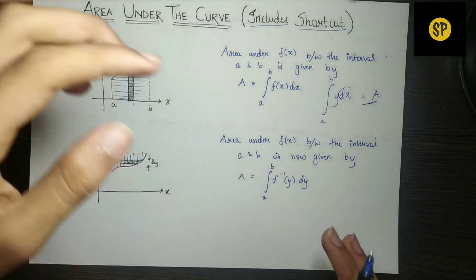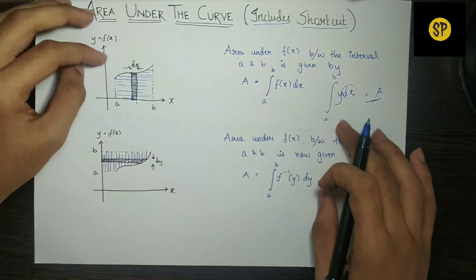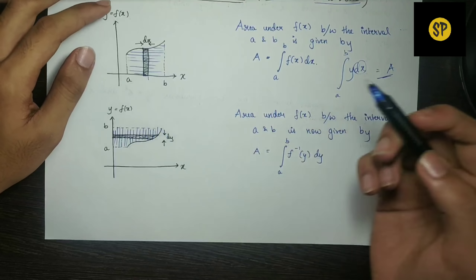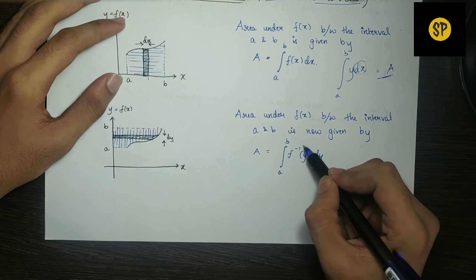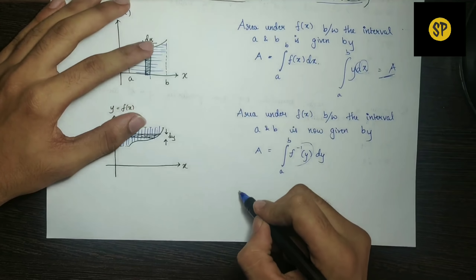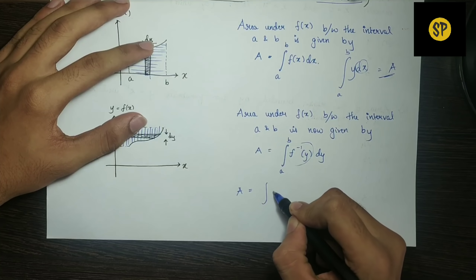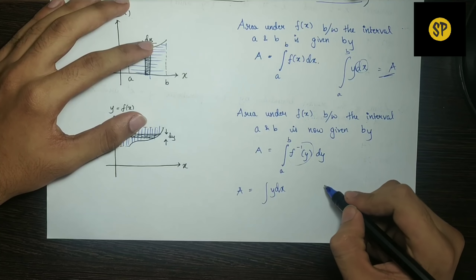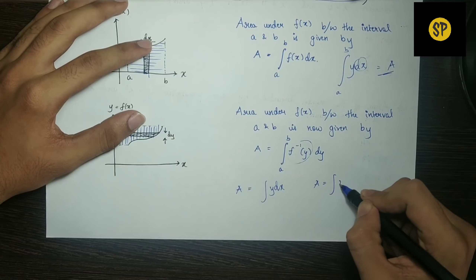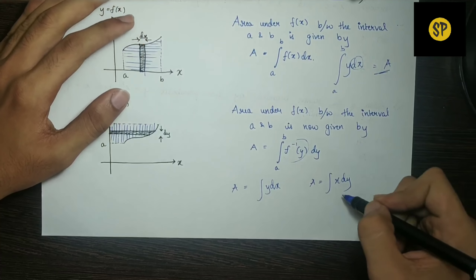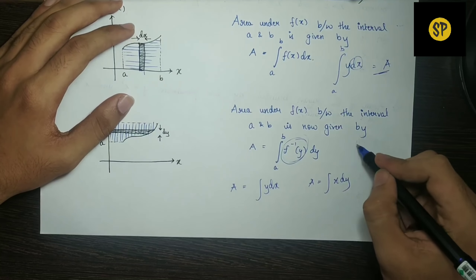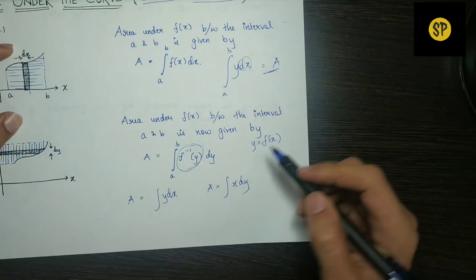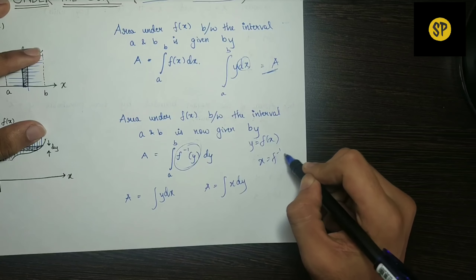If we are working with respect to the Y axis instead, we need to use F inverse of y. So the area with respect to the Y axis is the integral of F inverse of y dy, where x equals F inverse of y.